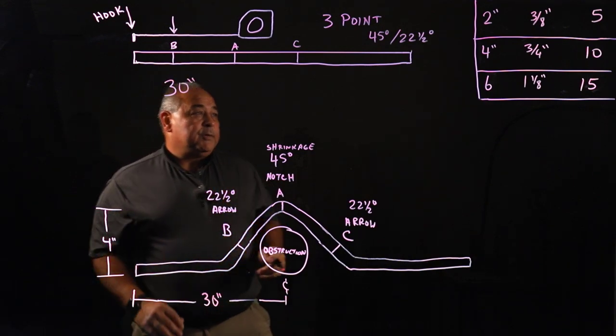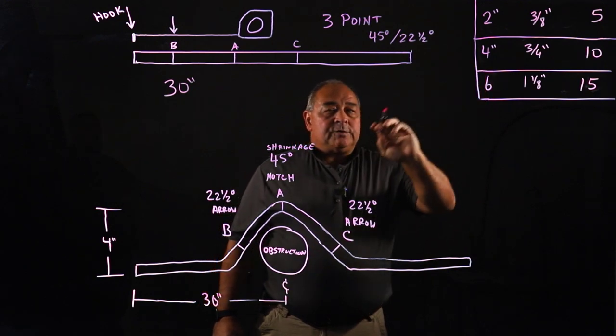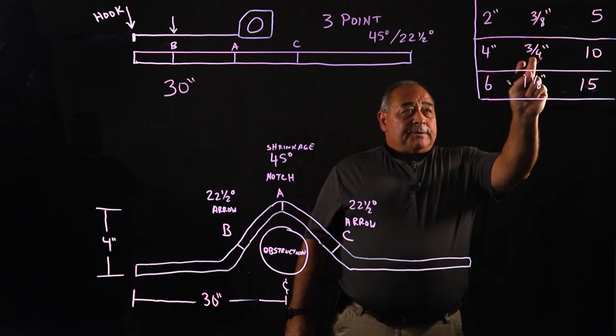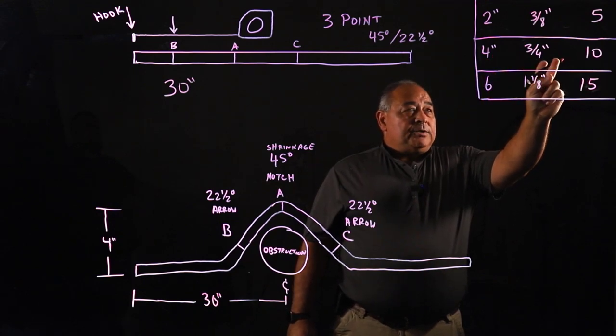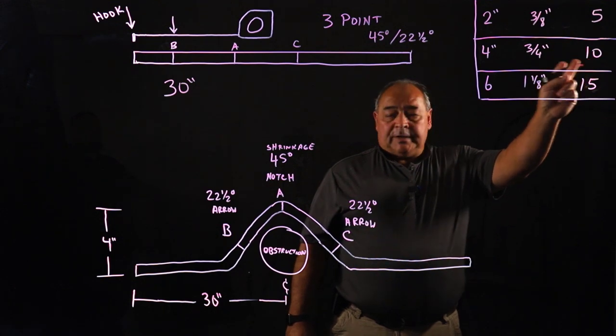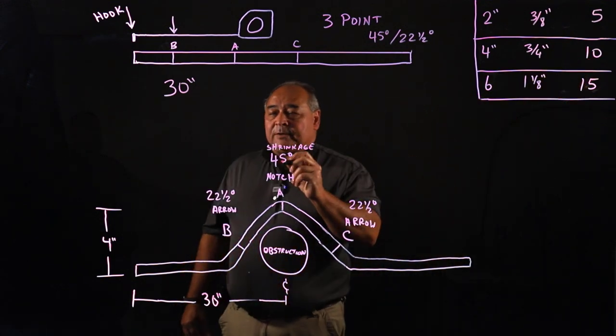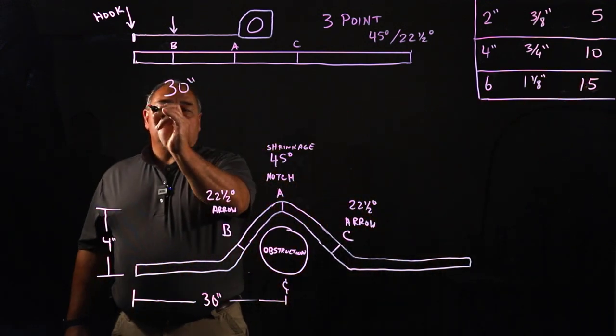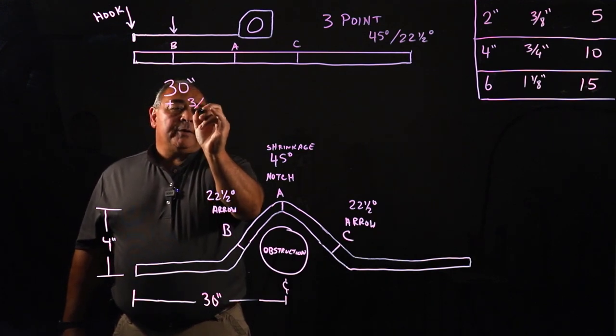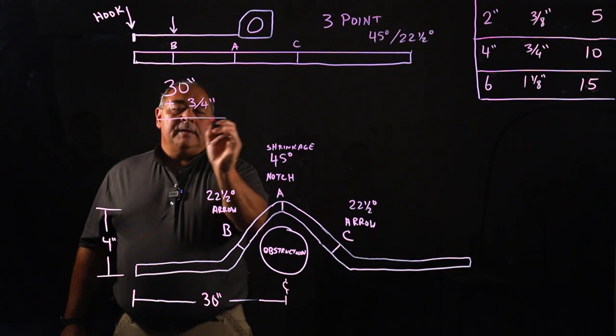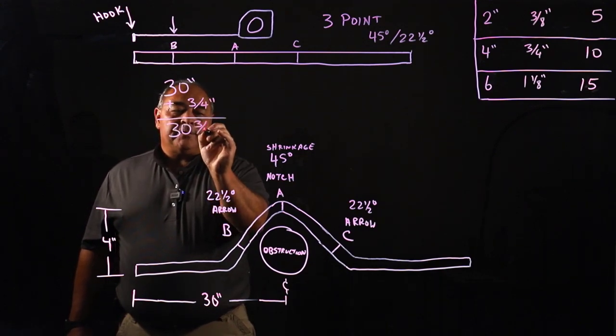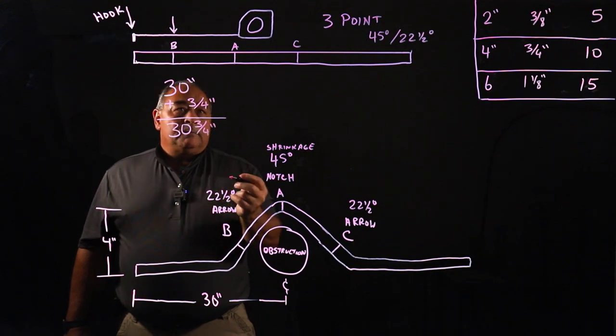We've got a four-inch obstruction. We'll look at our little reference chart that I've created over here. This four-inch, we're going to add three-quarters of an inch to that. And then our B and C marks are going to be measured at 10 inches. Here's how it works. We're going to add for our shrinkage plus three-quarters of an inch. So our total measurement for our A is going to be 30 and three-quarters of an inch. Not real hard, right?